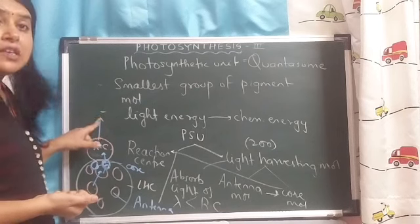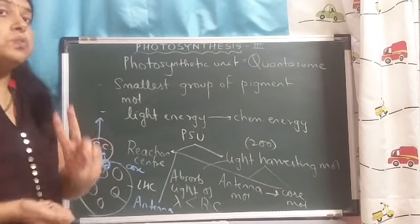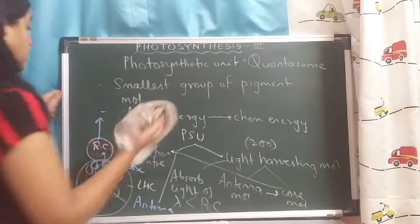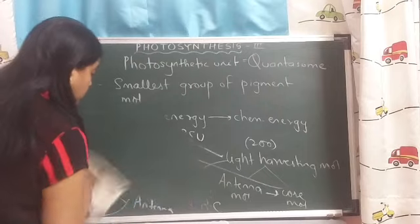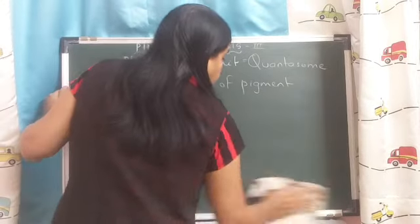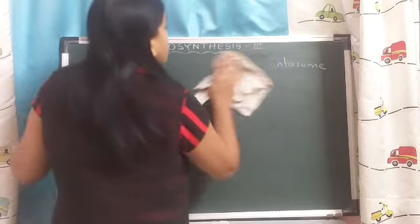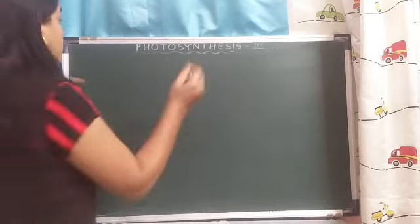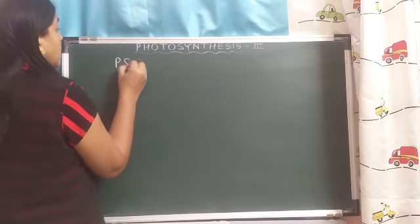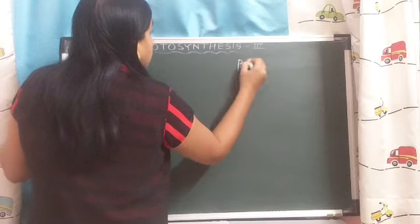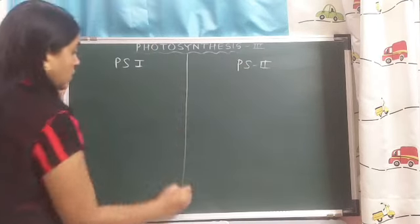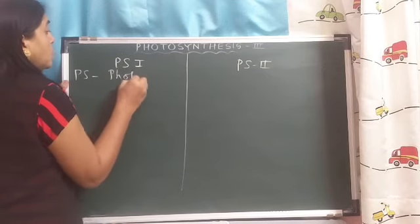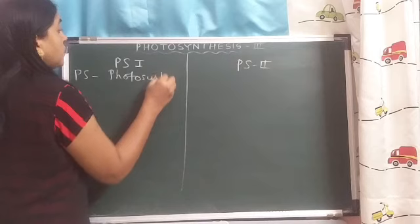Now we are going to discuss about the two photosystems that we know. One is PS1 and second is PS2. Let us talk about the two photosystems — PS1 and PS2. PS stands for photosystems.